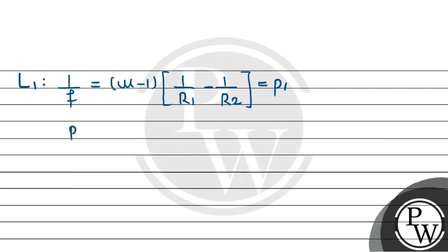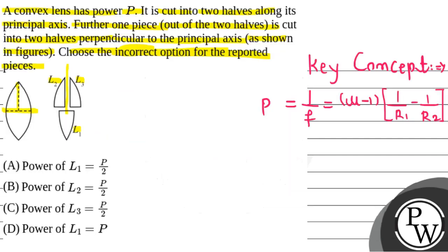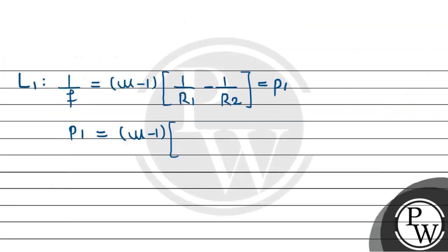For the full lens, P1 is equal to (μ − 1) times (1/R − (−1/R)), which simplifies to (μ − 1) × (2/R). This gives us the term P for the original full lens.